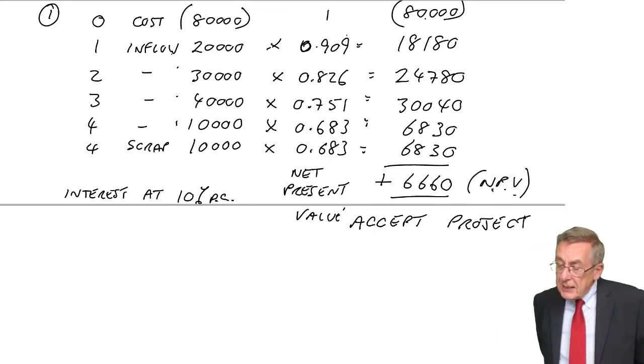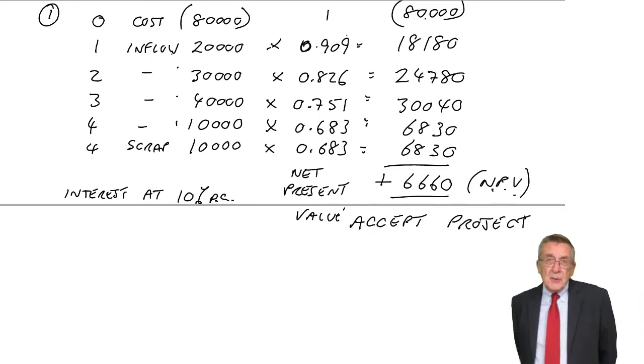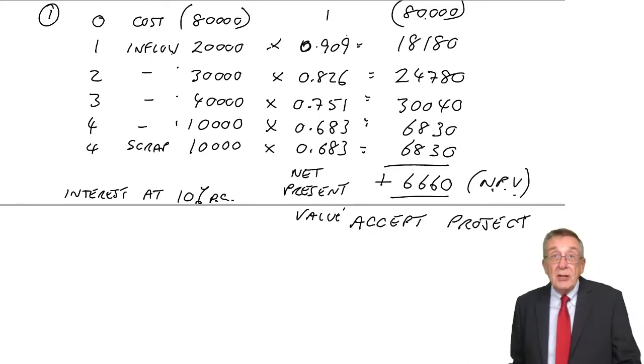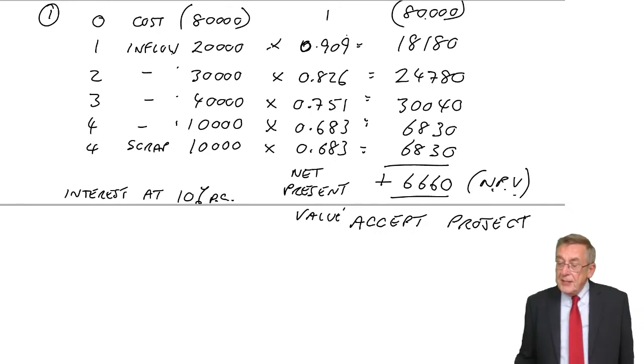Do appreciate, in practice, all those figures we've been using are estimates. When we had bought the machine, you'd be estimating what cash receipts you'd be expecting. And, of course, if they turned to be different, it may have made the wrong decision. But another problem is the rate of interest.